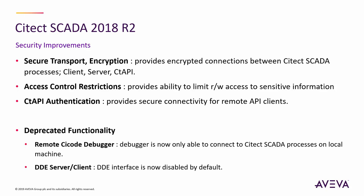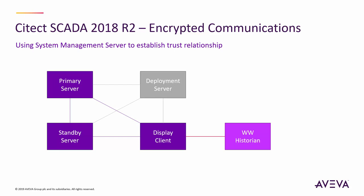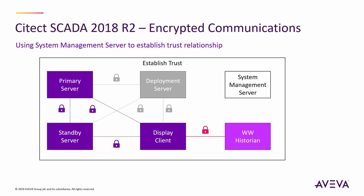There's also been a significant investment in security within the 2018 R2 release, adding support for encryption, user groups for access control, and more. In addition, some legacy functionality is now disabled by default. For example, a standard redundant configuration with a primary and secondary server pair, a remote client, a historian, and a deployment server can now easily be encrypted with the addition of a system management server. This facilitates the creation and deployment of certificates to establish a trust relationship between all system nodes.